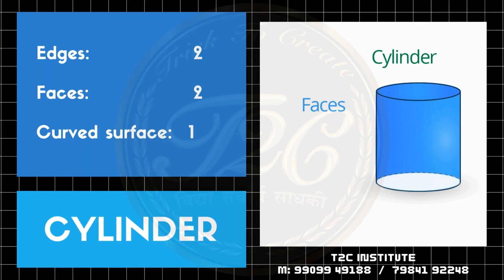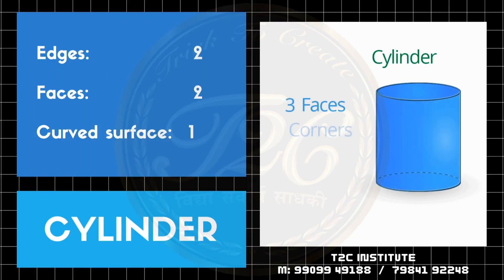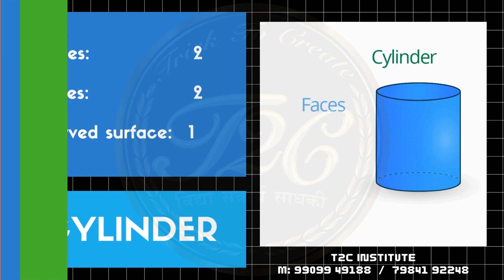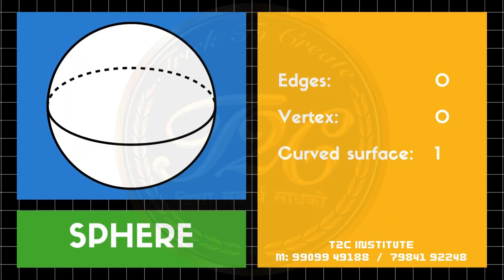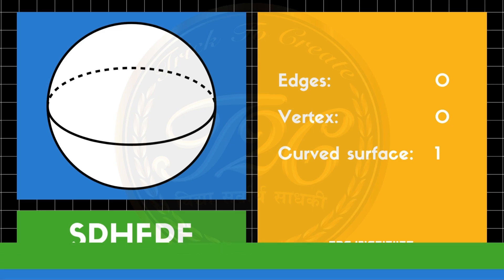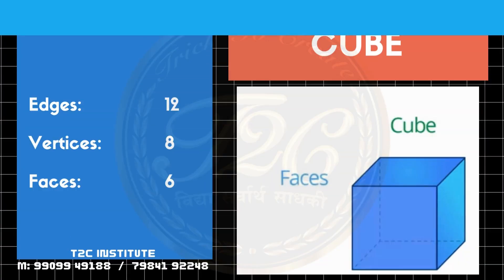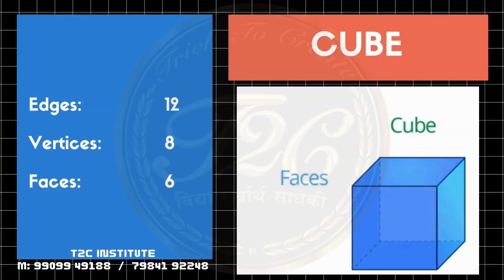Whereas in cylinder, we can clearly see it is having three faces, two edges and no corners. In sphere, it is just only having one surface, nothing else.